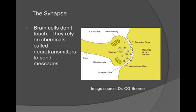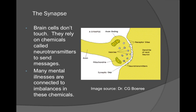So the brain cells themselves don't actually touch—they rely on chemicals called neurotransmitters to send messages. And many mental illnesses are connected to imbalances in these chemicals.